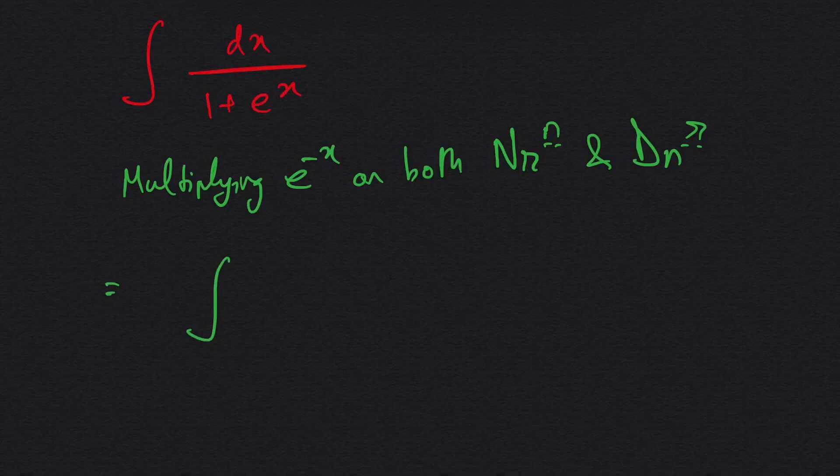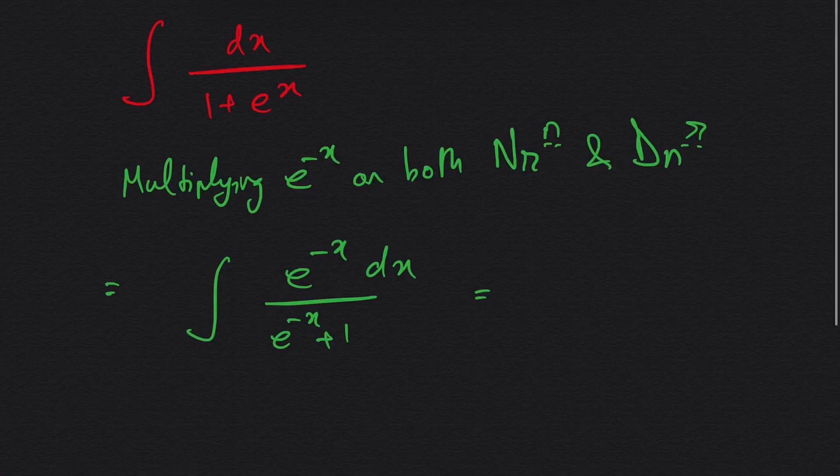So you can see that the upper part is the minus of derivative of the lower part. So the integration becomes d of 1 plus e to the power minus x, and the minus sign will come here, and the lower part will be 1 plus e to the power minus x.